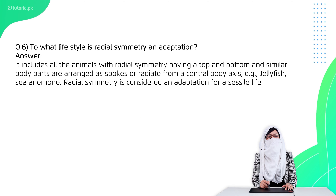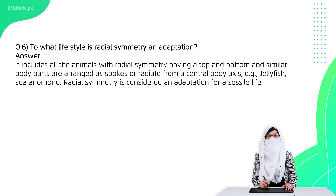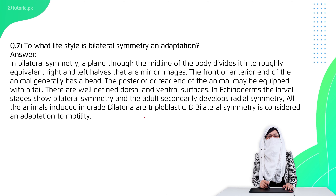Question 6 is: to what lifestyle is radial symmetry adapted? In radial symmetry, everything is equally distributed radially, so these animals are mostly slow-moving or attached to something, like coral reefs and hydra.